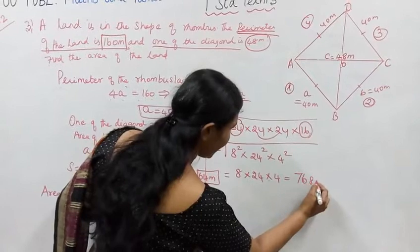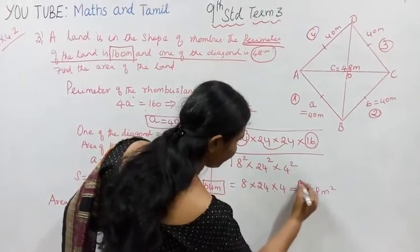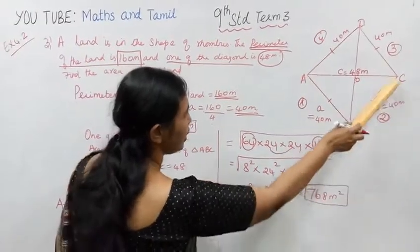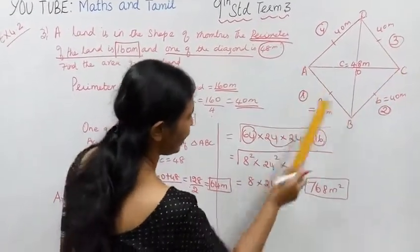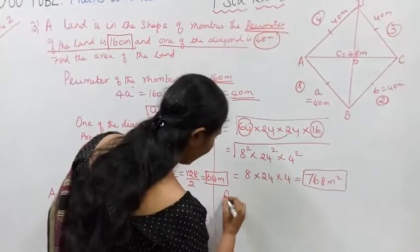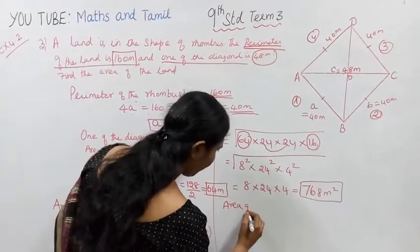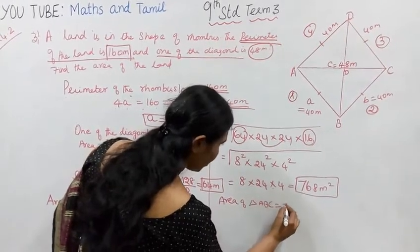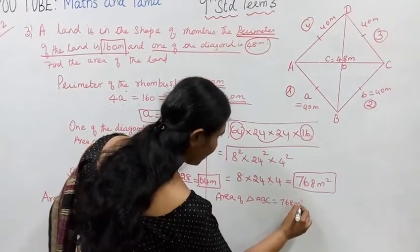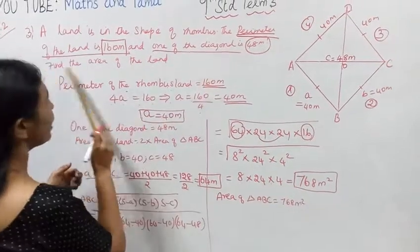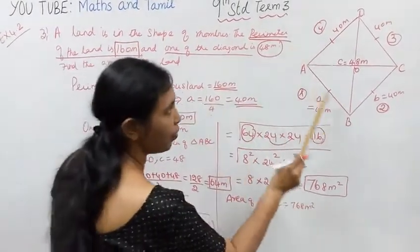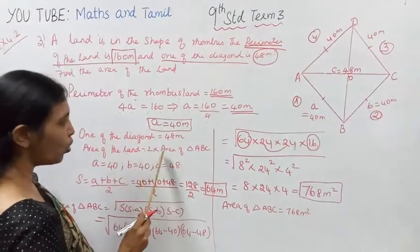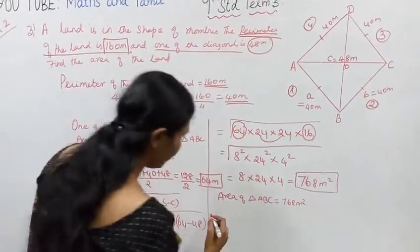Area of triangle ABC equals 768 meters squared. To find the area of the land, area of the land equals 2 into area of triangle ABC.